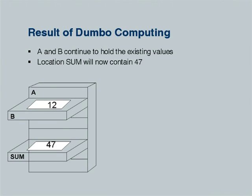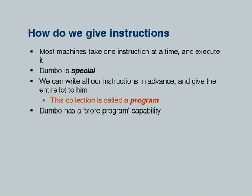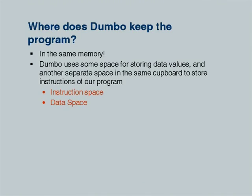Most machines take one instruction at a time and execute it. Dumbo is special because you can store instructions — hence we call it a stored program machine. Dumbo stores instructions in the same memory as data, logically partitioning the cupboard into two parts: one for data values and one for instructions — called instruction space and data space.